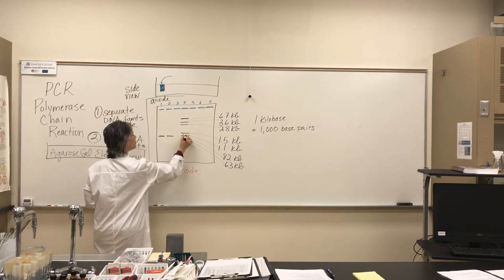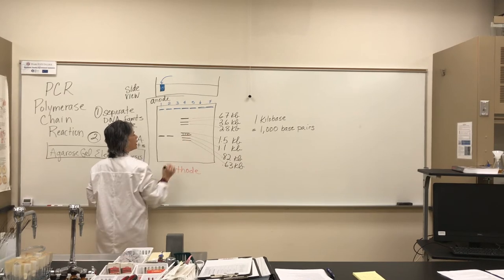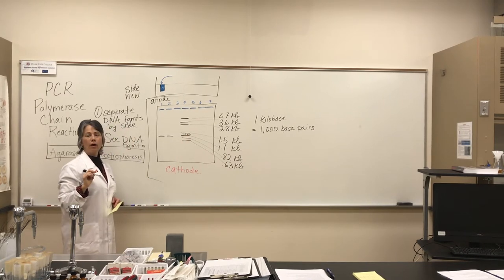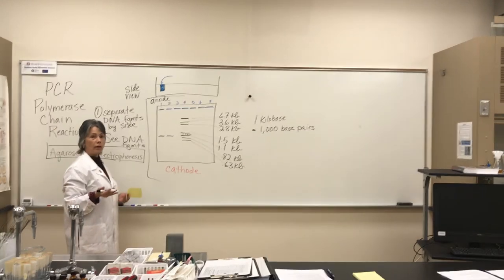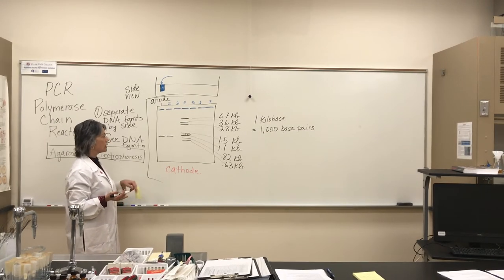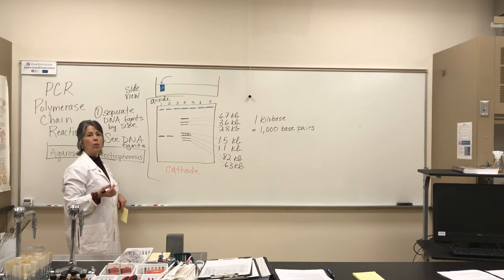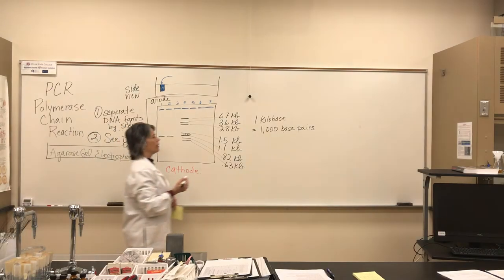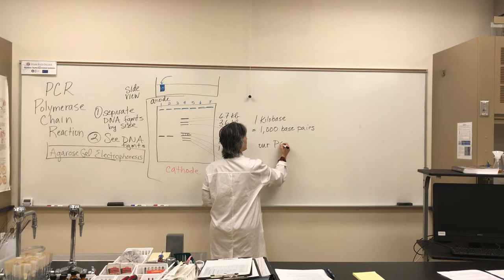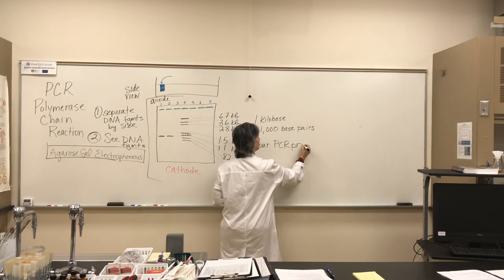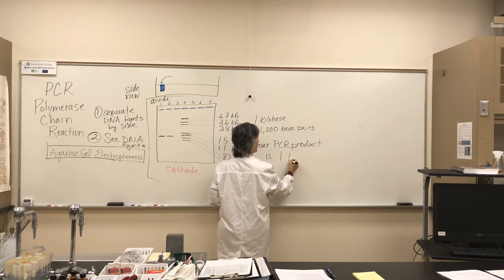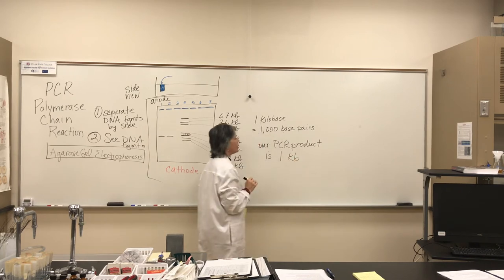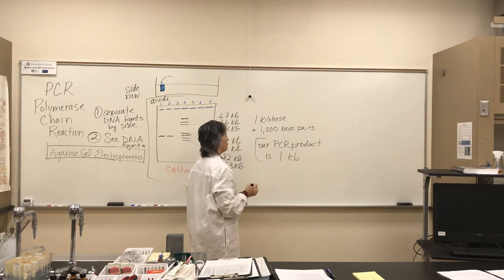That way you compare your bands to bands of known sizes, and you can check, or even more precisely if you use a graph, size the DNA band that you're seeing in your sample. We are not going to precisely size today. We are going to just check that if we see bands, we're expecting them to run right about at this level. Because this is 1.1 KB. Our PCR product is 1 KB, 1,000 base pairs.